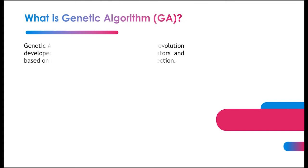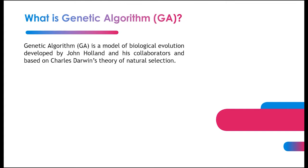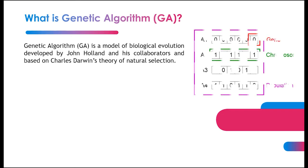Genetic Algorithm (GA) is a model of biological evolution developed by John Holland and his collaborators, based on Charles Darwin's theory of natural selection. These are the terminologies used in genetic algorithm. Gene is usually represented by a string and it depends on the number of variables of the problem.